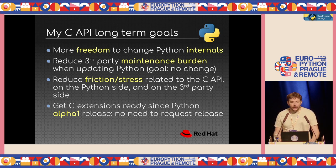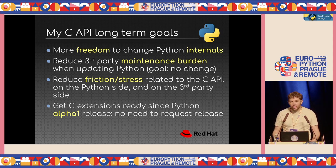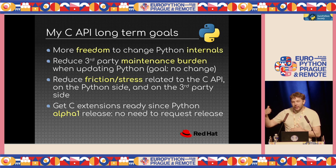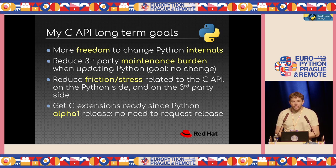As a Red Hat employee, what we do is try to update Python as soon as possible in the Fedora project to get feedback early, starting at the alpha one release. But one issue is that usually some projects are broken and not compatible with the new Python, and we have to update them one by one. When you have a long dependency list, it can take several months to fix each dependency. If more C extensions use the stable ABI, the main advantage is they are ready from day one of the alpha one release.